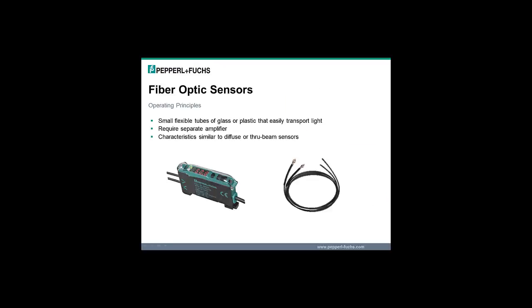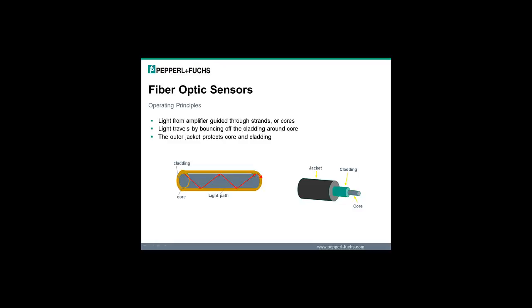Fiber-optic sensors require both fiber-optic cables and a fiber amplifier. Fiber-optic cables are small flexible tubes of glass or plastic that easily transport light. The fiber amplifier is a separate sensor that houses both the emitter and receiver, and the sensing characteristics of fiber-optics are similar to diffused or through beam mode sensors. Light from the fiber amplifier is guided through transparent strands within the fiber or cores by total internal reflection, traveling along the core by bouncing off the cladding wrapped around the core. The outer PVC or stainless steel jacket protects the core and cladding from damage.